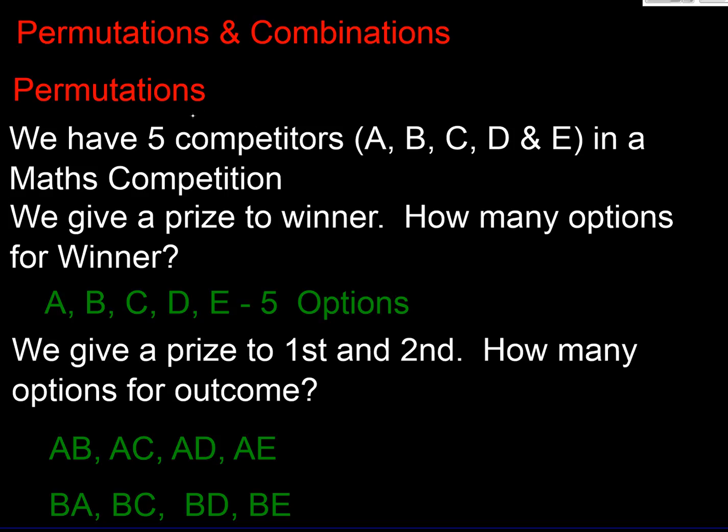Let's do a very quick explanation. So let's start with permutations. We have five competitors A, B, C, D and E in a maths competition. We give a prize to the winner only. How many options do we have? Well either A wins or B wins or C wins or D wins or E wins. So we've got five options there.